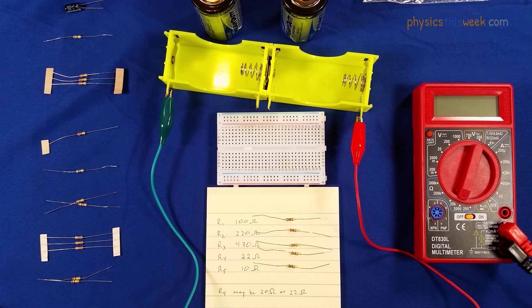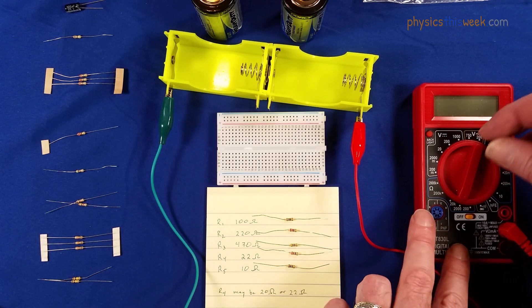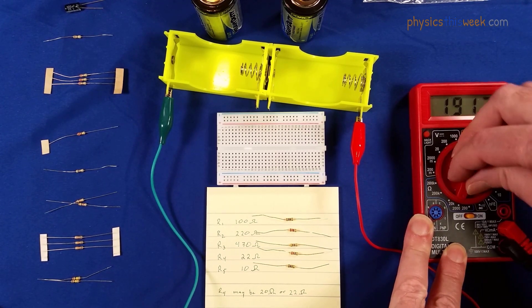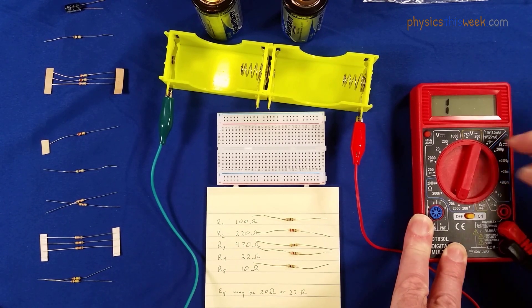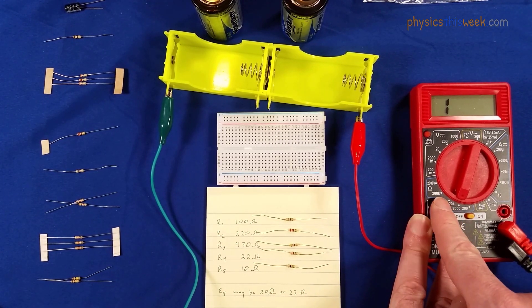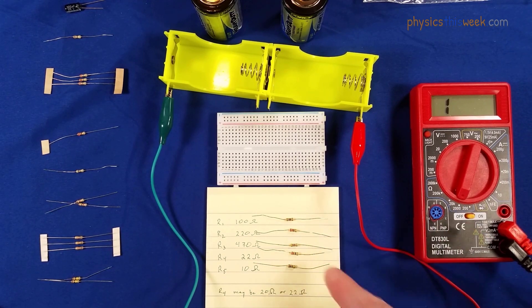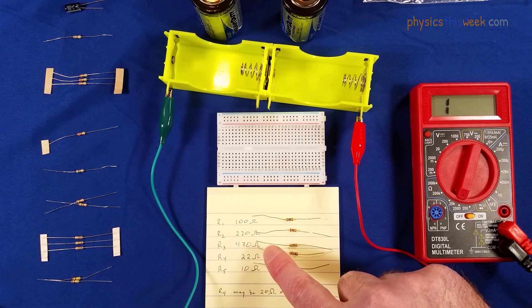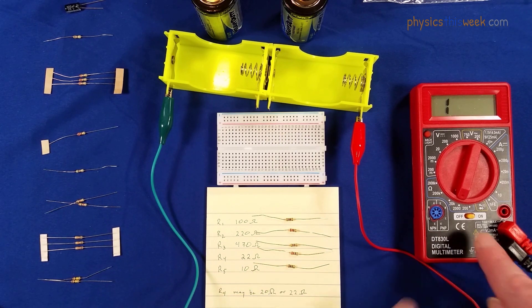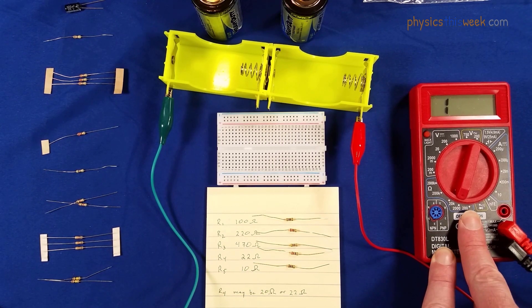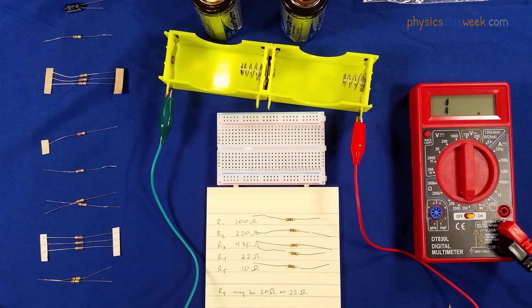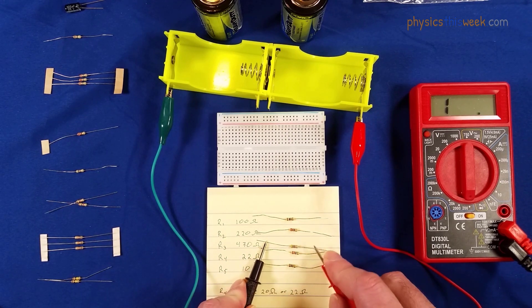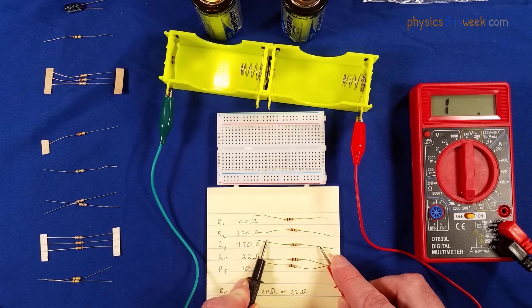First we have to actually measure the resistance of these resistors. So what I'm going to do is turn on my multimeter and then I'm going to make sure that I'm in the right range here for taking the resistances. Now because I have already set out my resistors, I know they go up to 470 for resistor number 3 and lower values for that. I know that setting it on 200 is just a little bit too low.